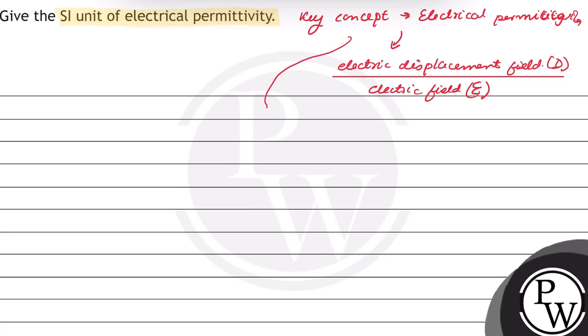Electrical permittivity is denoted as epsilon and can be related with force as F equals 1 over 4π epsilon naught times q₁q₂ over r squared.